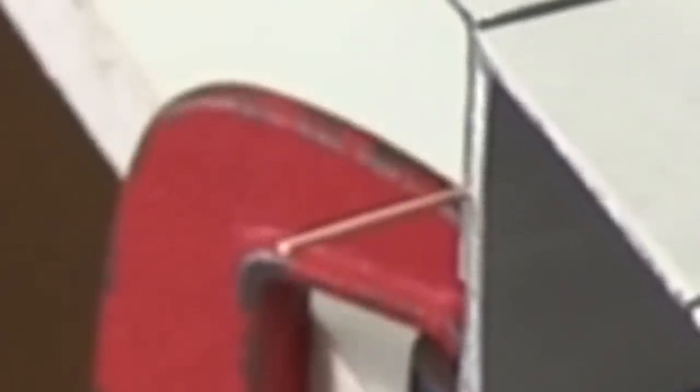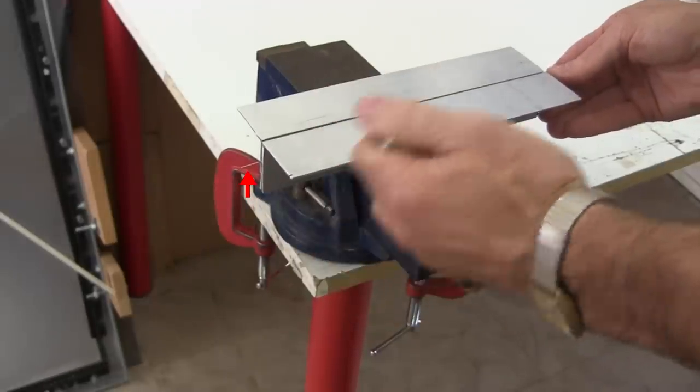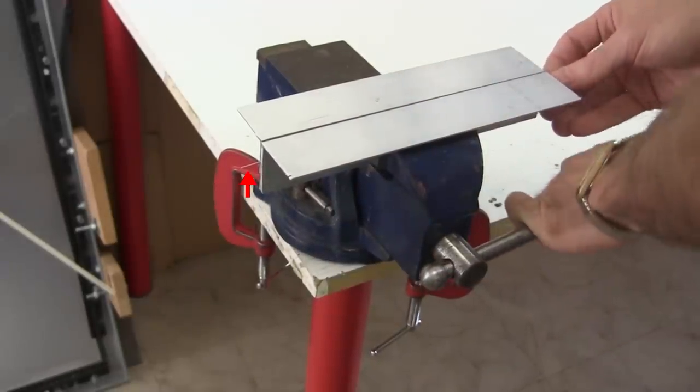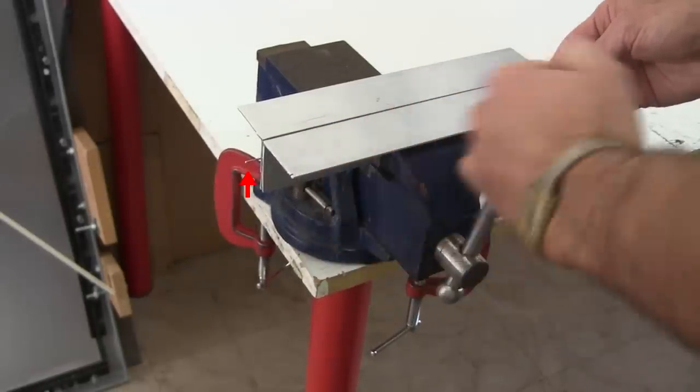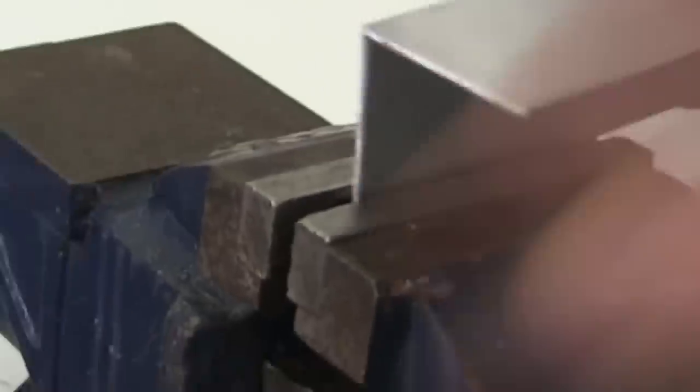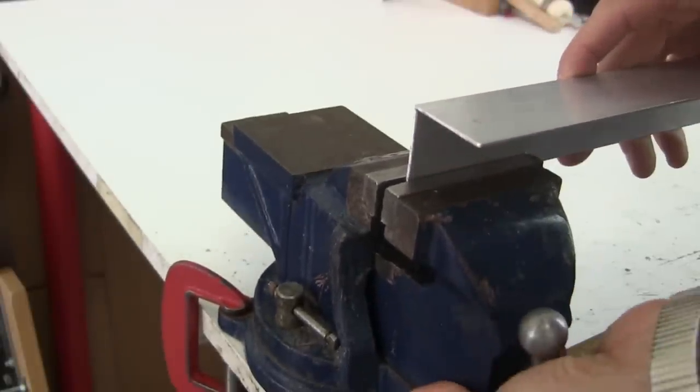So I put it in my vise along with the angle pieces since the vise isn't long enough, and press the wire straight. Rotating it into different positions as I go along. Then I put the wire in place and make sure the ends are flat using the vise again.